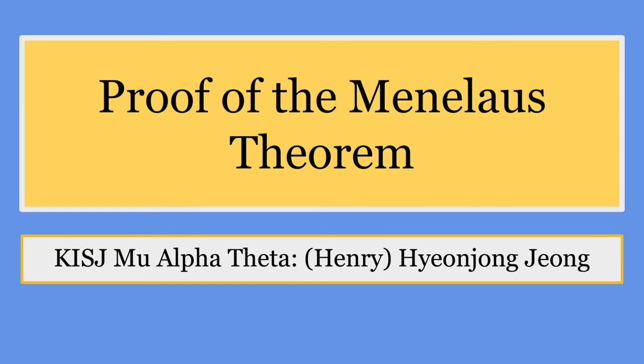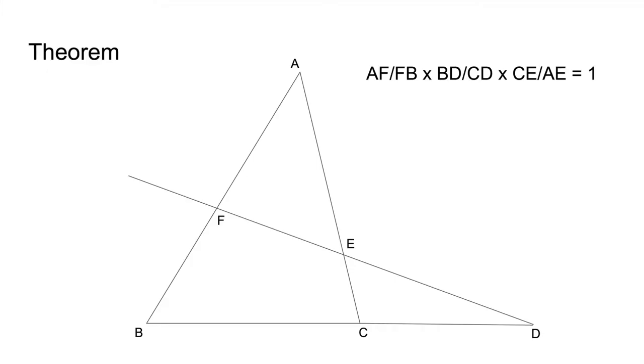Hello, this is Henry John of the Mu Alpha Theta club, and I'm going to be proving the Menelaus theorem in this video. So here's the theorem itself: AF over FB times BD over CD times CE over AE equals one.